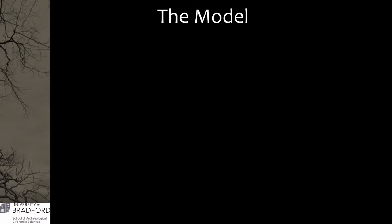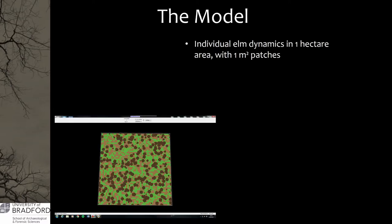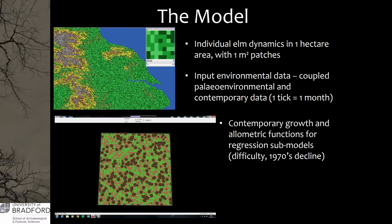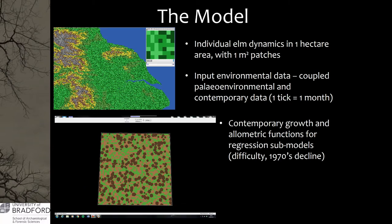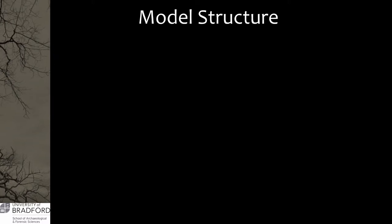The model I've been working on is essentially modelling a simulation space of around one hectare, populated with different woodland species, and simulating their effect and how they interact with each other. One tick is equal to one year in simulation space currently. Hopefully it'll be a case of scaling up potentially using patch-based dynamics for the larger-scale environment, but it'll probably be a case of we'll just do local scale in a large landscape with the distributed simulation processing later on.